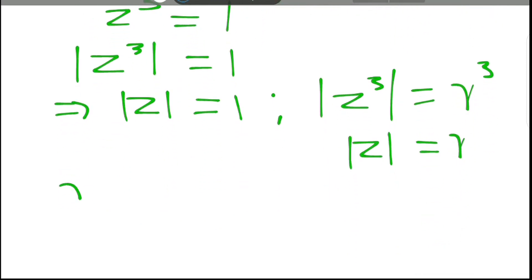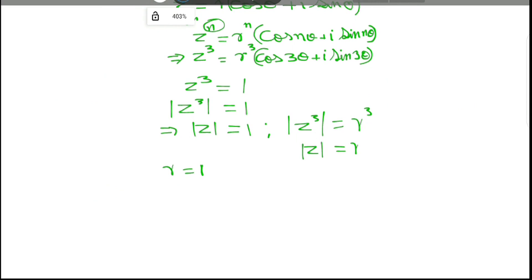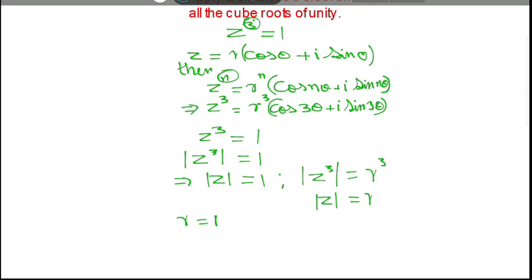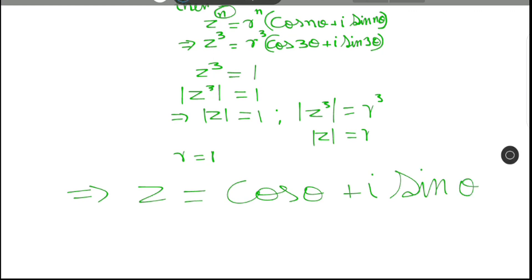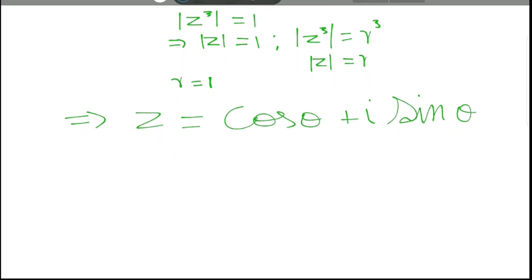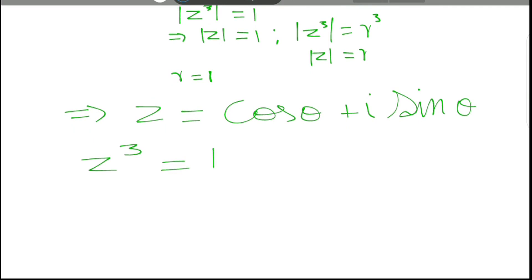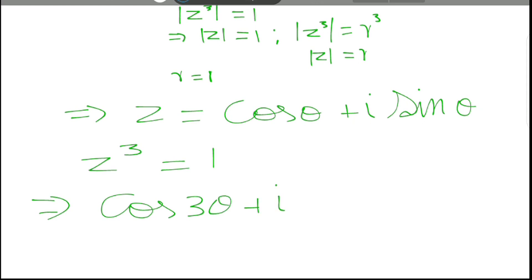We observe from this that modulus of z equals r equals 1, so the value of r equals 1. We can therefore write z as cos θ + i sin θ. Applying De Moivre's theorem with z cubed equal to 1, that implies cos 3θ + i sin 3θ equal to 1.